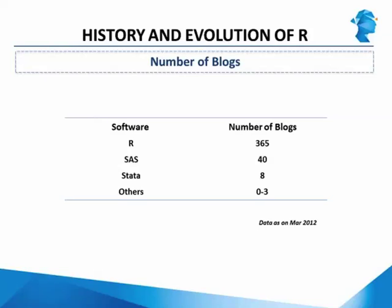Despite the growing use of R in business analytics, it is still not perceived as a leading tool by employers who prefer expensive tools like SAS. It is only in the last five years or so that demand for R in business has started increasing. Large numbers of Indian and global organizations are switching to R — Google is one example. Currently R is the second most popular tool in business analytics behind SAS, and Jigsaw Academy offers online courses on SAS as well for those looking to make a career in business analytics.